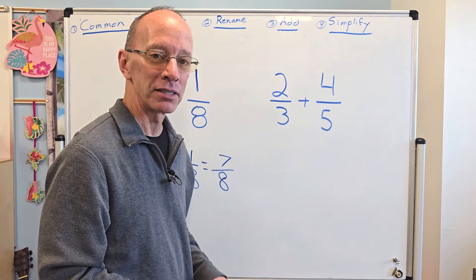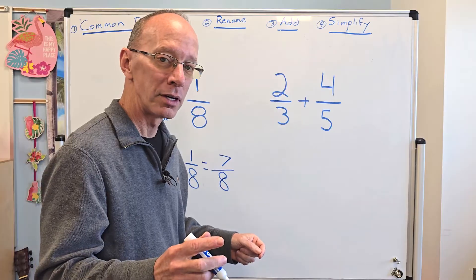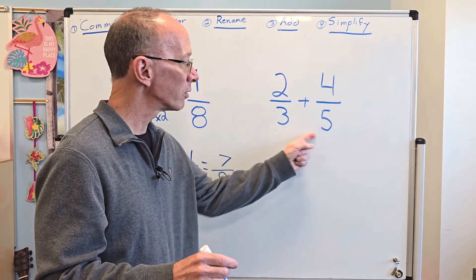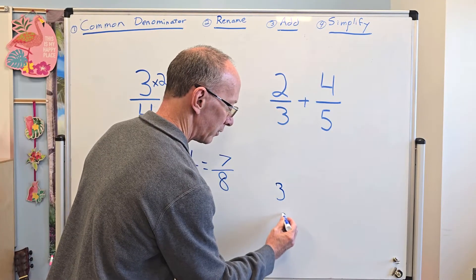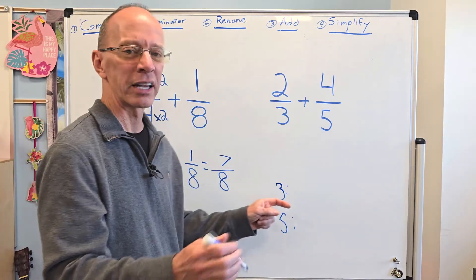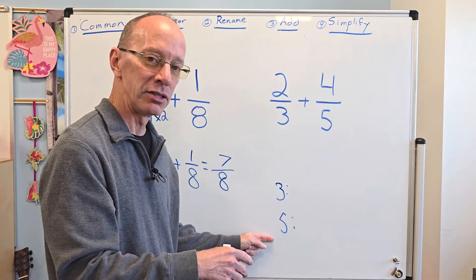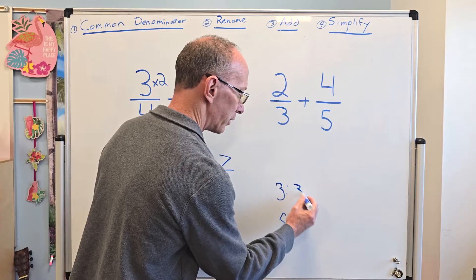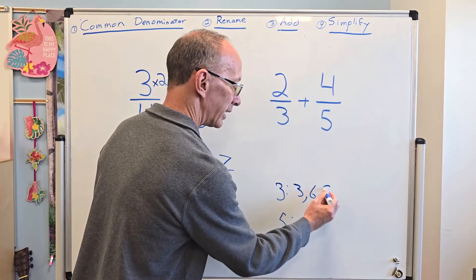Take a look at the denominators. Are they the same? No. So we need to find the least common multiple that both of these numbers fit into. So I'm going to put down three here and then five here. So three times one is three. Three times two is six. Three times three is nine.